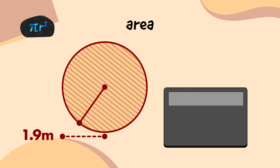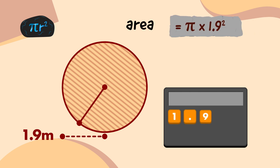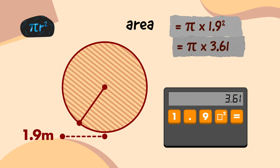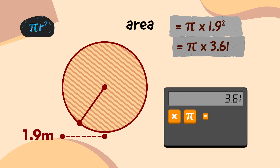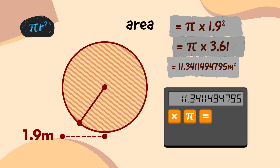So on my calculator, I'm going to start by doing the radius squared. I'll type 1.9, press the square button, and press the equals button, which gives me 3.61. Then, I'm going to multiply 3.61 by pi. So I'm going to press the multiply button, press the pi button, and press the equals button, which tells me that the area of the emblem circle is 11.3411494795 square metres.